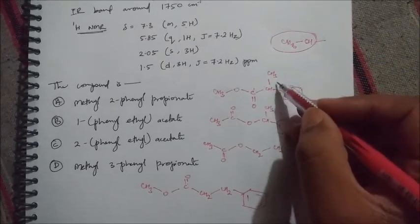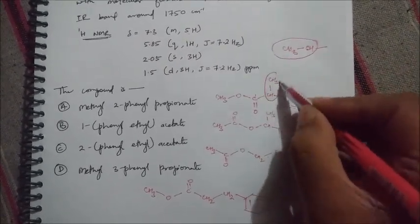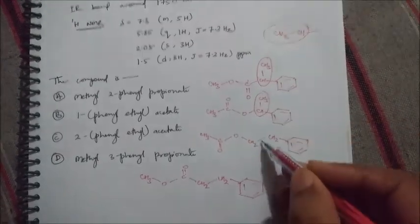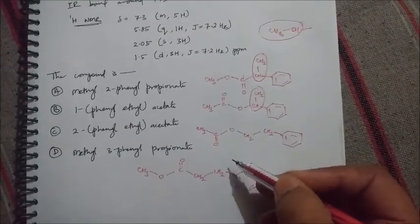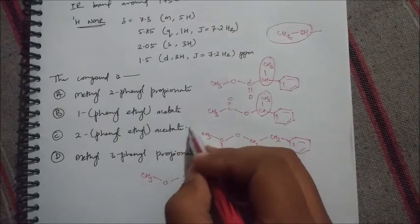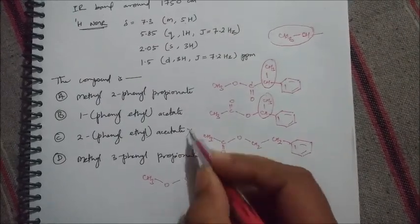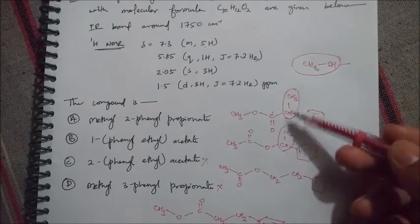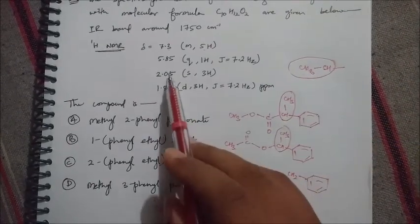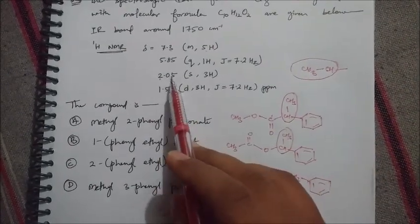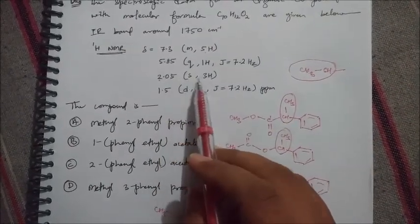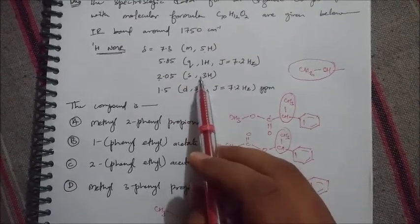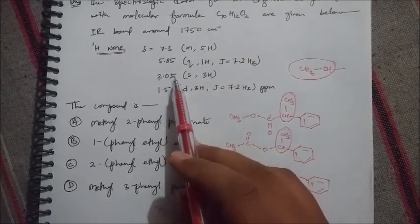This CH3-CH group is present in option A and option B, but not in options C and D. So we can eliminate options C and D. Now we just have to check between these two remaining options. The singlet integrating for three protons is due to the presence of a methyl group, which is present in both of the remaining options.